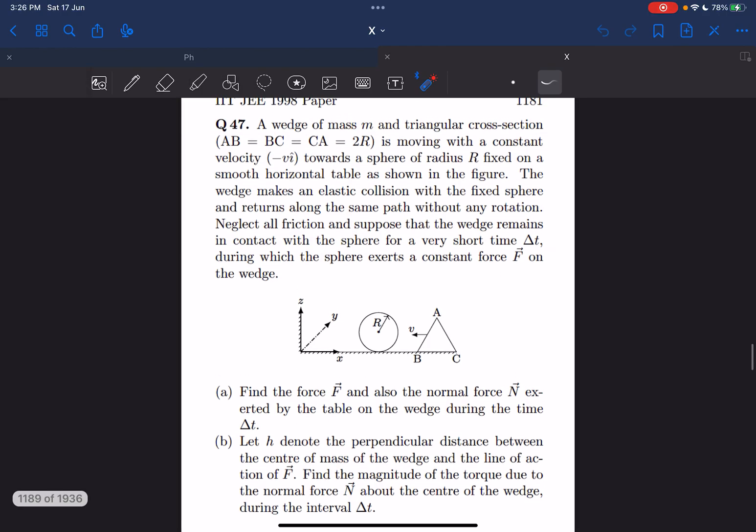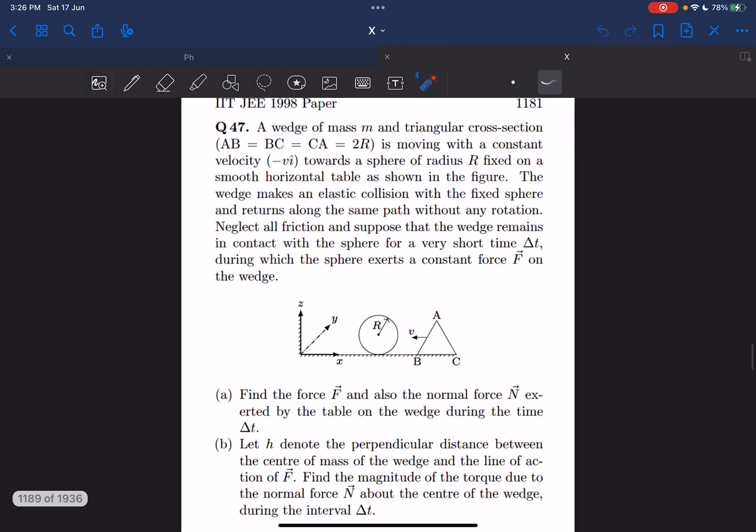Hey everyone, in this video we'll be solving this problem that came in 1998. Let's start reading the question. We have a wedge whose mass is m and the cross section is triangular.